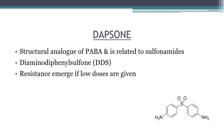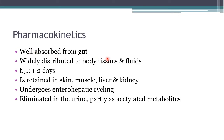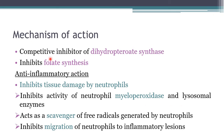Dapsone is a structural analog of PABA and is related to sulfonamides. It is a diaminodiphenyl sulfone (DDS), and resistance emerges if low doses are given — hence combination therapy is always used. It is well absorbed from the gut and widely distributed to body tissues and fluids. Its half-life is 1–2 days so it is given once daily at 100 mg. It is retained in skin, muscle, liver, and kidney, undergoes enterohepatic cycling, and is eliminated in urine partly as acetylated metabolites.